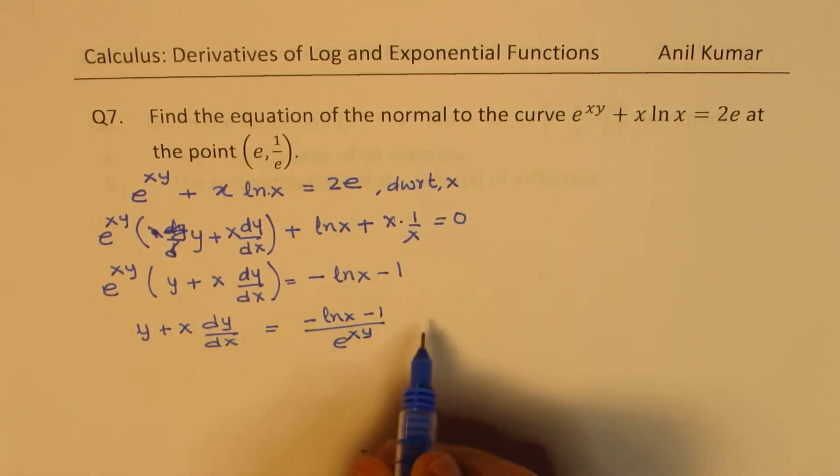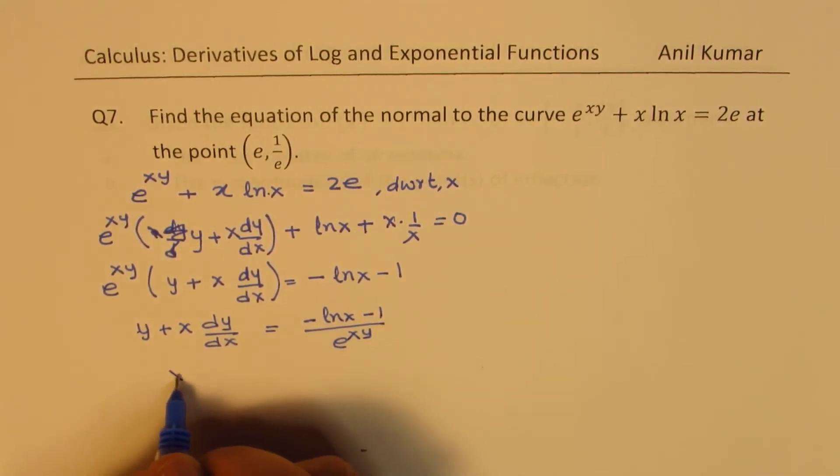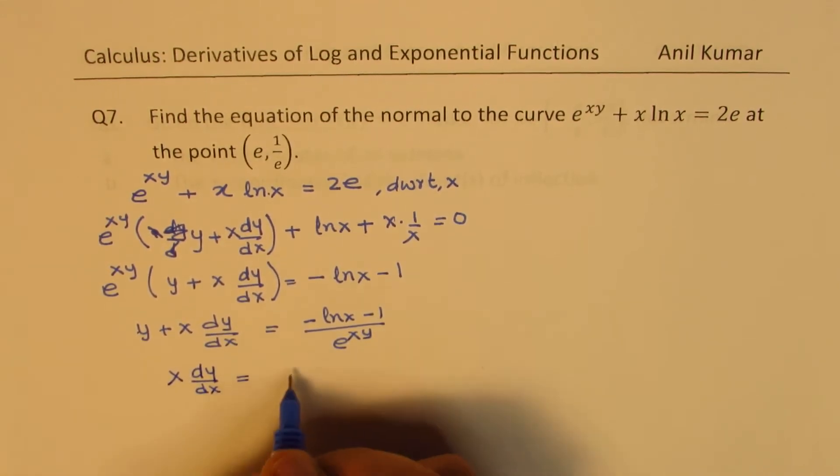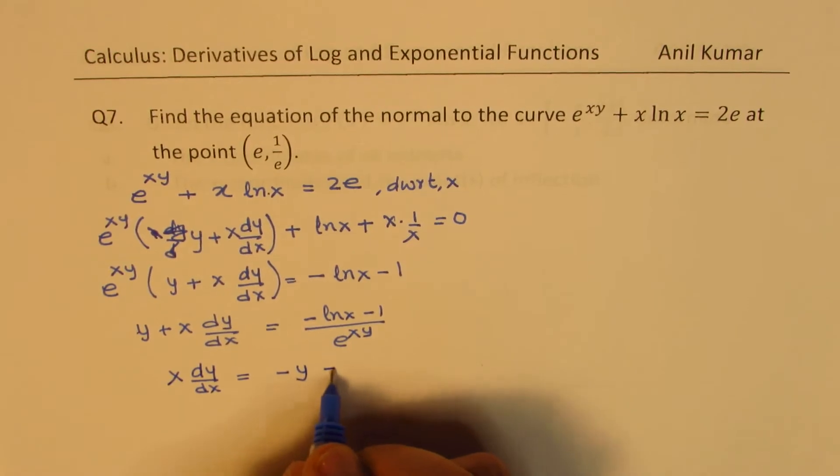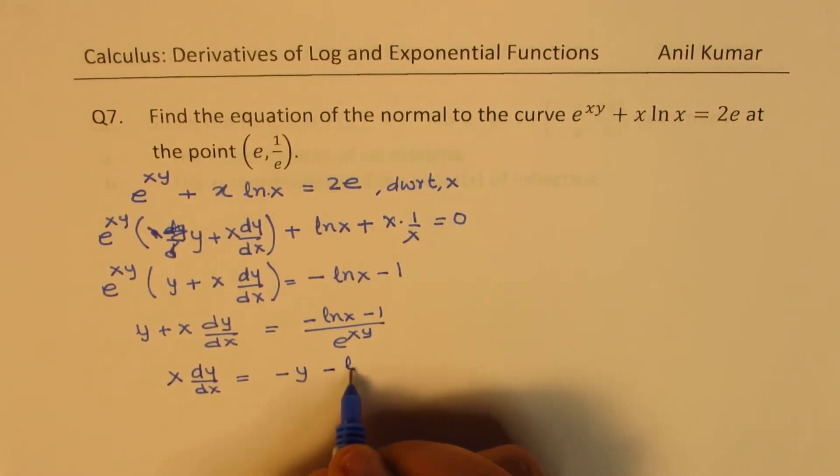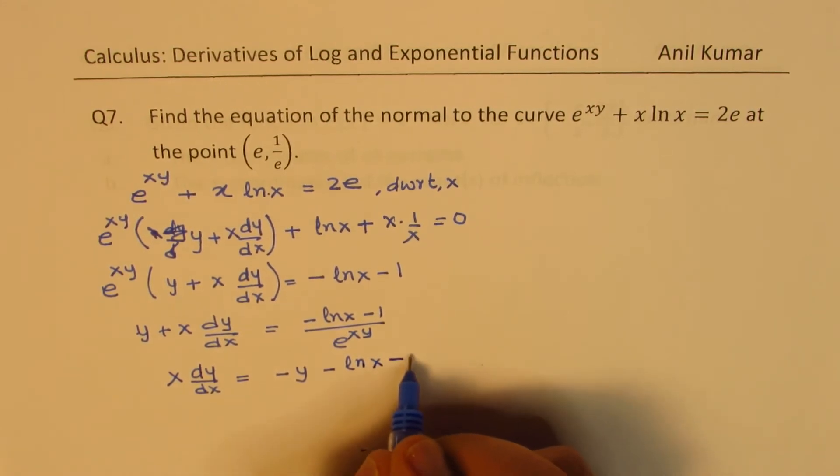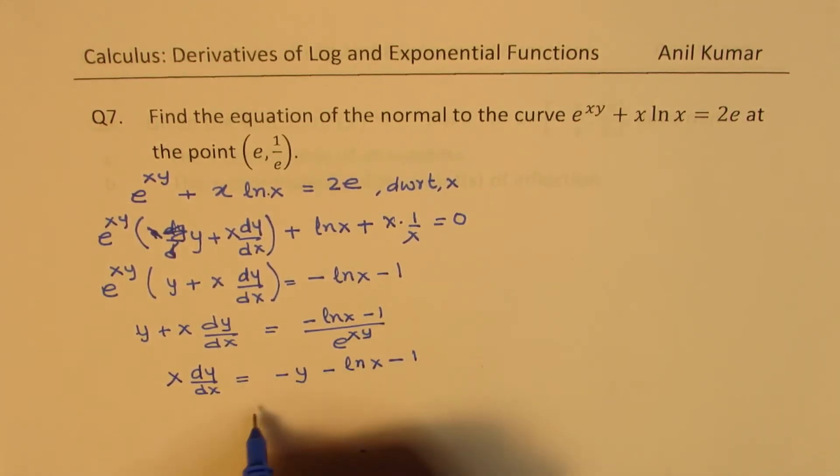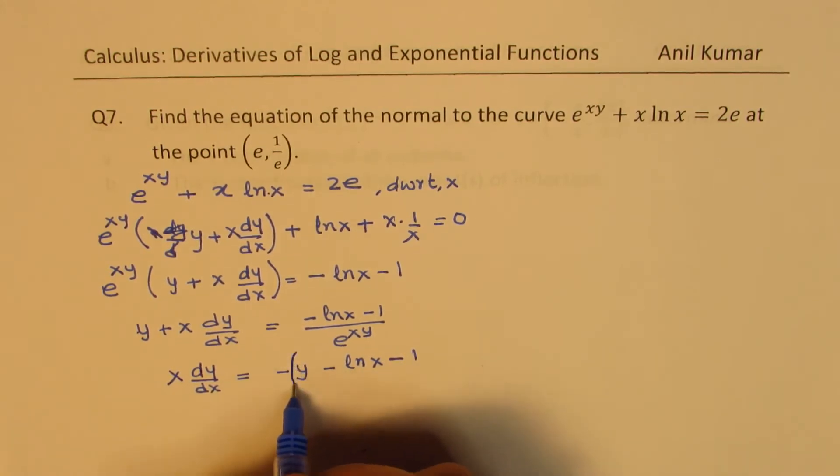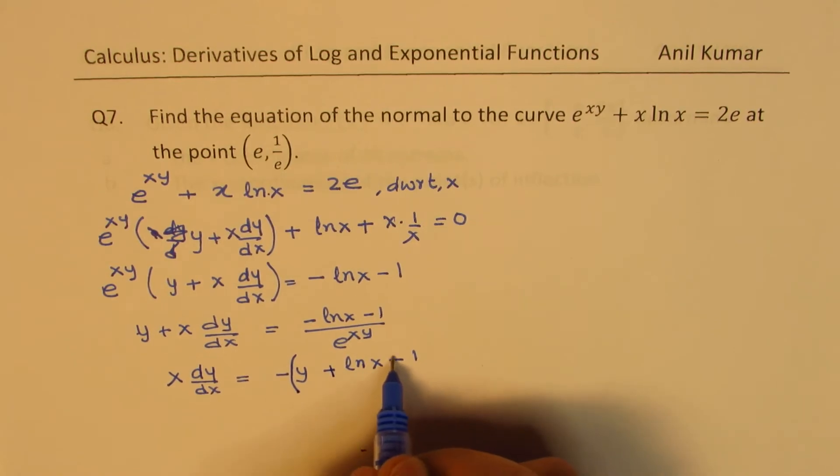We cannot take away y from here. So we get x dy/dx equals -y - ln(x) - 1. A better way is to take the negative outside, so we put a bracket and then everything becomes positive.